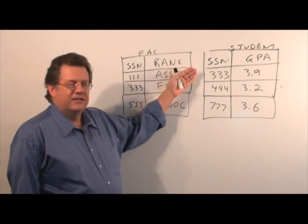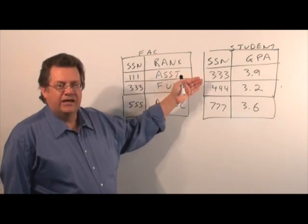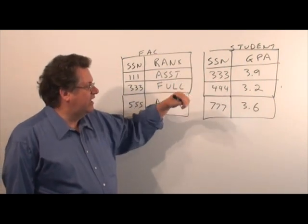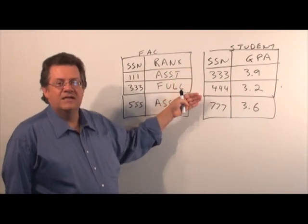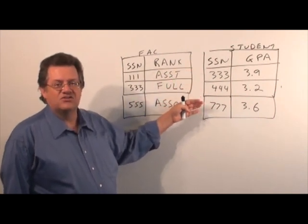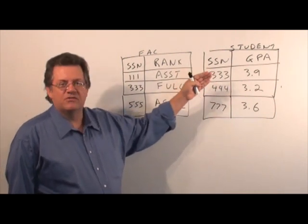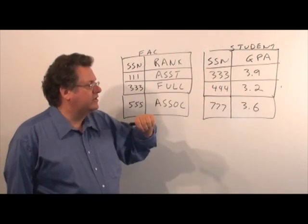Now, on my right, I've got social security number, and we have grade point average. And we have 333, 444, 777 as social security numbers, and the respective grade point averages of 3.9, 3.2, and 3.6.